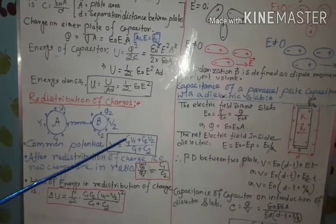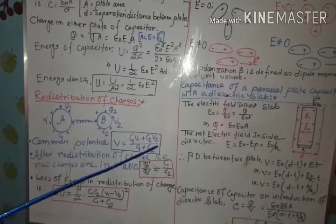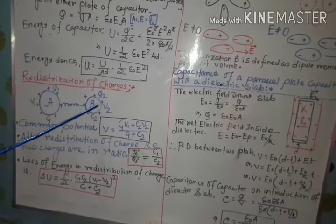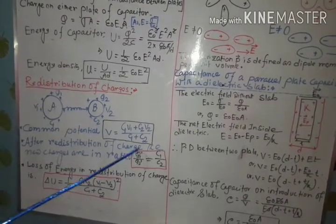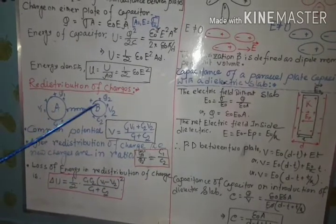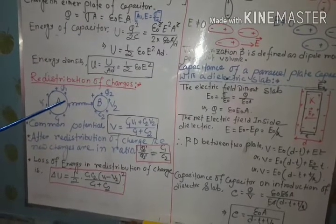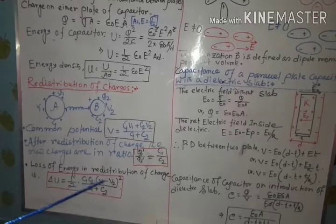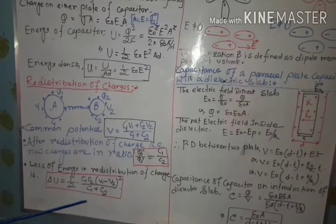The common potential V equals C1 V1 plus C2 V2 divided by C1 plus C2 — only remember the formula, deduction is not required. Similarly, after redistribution of charge, the new ratio of the charges is Q1 dash by Q2 dash equals C1 by C2. And the energy lost due to charge transfer is delta U equals half into C1 C2 into bracket V1 minus V2 whole squared divided by C1 plus C2. This is an important formula for numerical purpose.